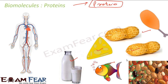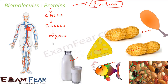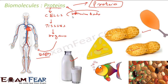Proteins occur in almost every part of the body and form the basis of all structure and functions of human life. Proteins make cells, cells make tissues, tissues make organs, and organs make the full body. Protein itself is made of amino acids — there are about 20 amino acids which make protein.